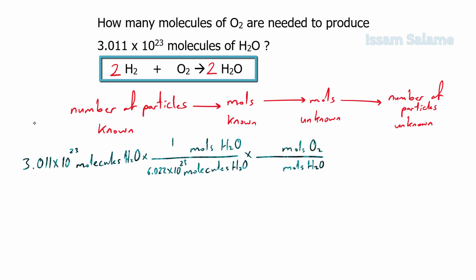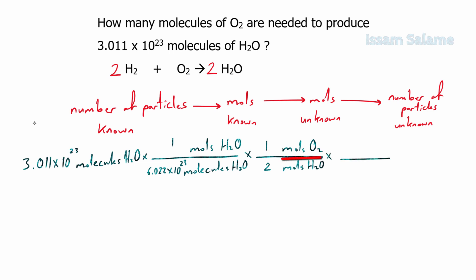The coefficients we get from the balanced chemical equation — we put 2 next to the water molecules and 1 next to oxygen. Then we convert moles of oxygen molecules to number of particles of oxygen molecules: putting moles of oxygen in the denominator and molecules of oxygen in the numerator, 1 next to moles and Avogadro's number, 6.022 × 10²³, next to molecules. We cancel all matching units between numerators and denominators.